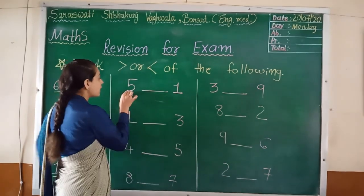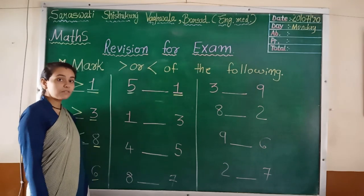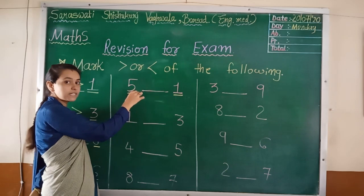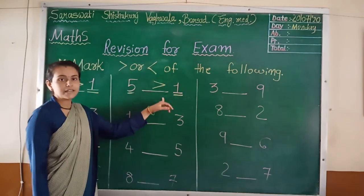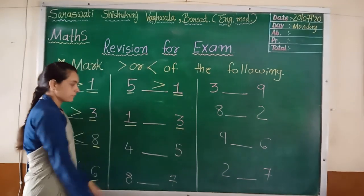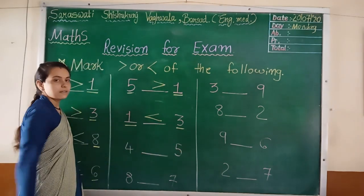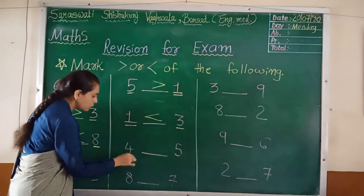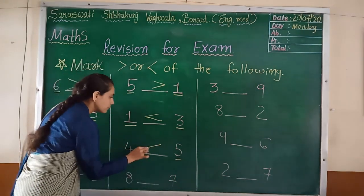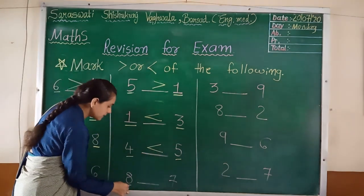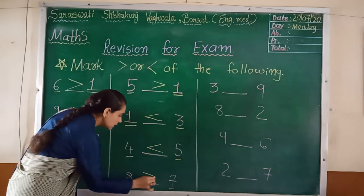Now another example. Five and one. Compare them. Which is the big number? Five or one? Five, right? So, five is greater than one. One and three. Which is the bigger number? Three. So, less than. One is less than three. Four and five. Which is the bigger number? Five. So, less than. Eight and seven. Which is the bigger number? Eight. So, greater than.